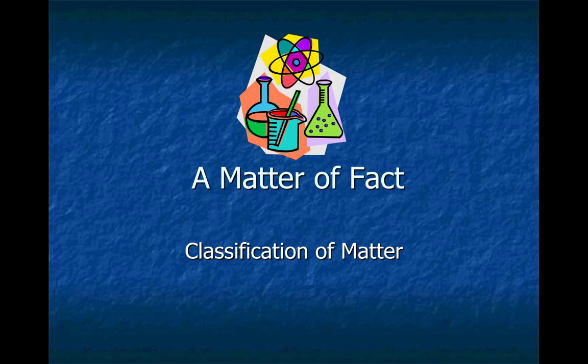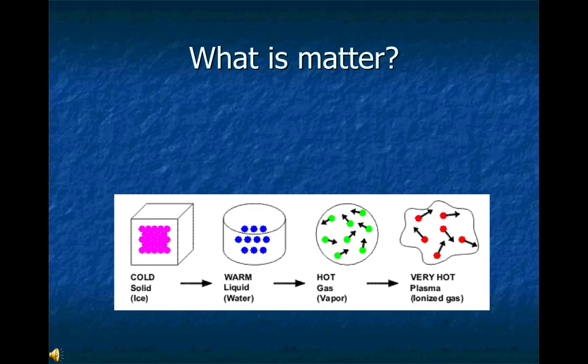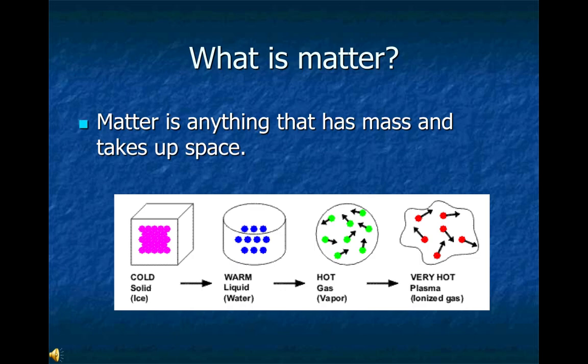So let's start with classification of matter. But before we can classify it, we have to learn what it is. So what is matter? We know that matter can be either a solid, a liquid, or a gas. That probably means that it needs to have some mass and take up some space. So matter is anything that has mass and takes up space. You can go ahead and pause me and add this definition to your foldable.